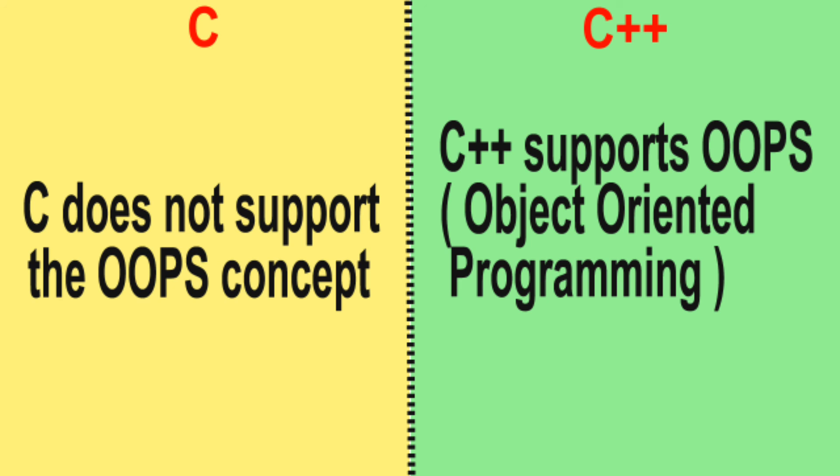Difference number 14: C does not support the OOPS concept. C++ supports the OOPS concept, object-oriented programming.